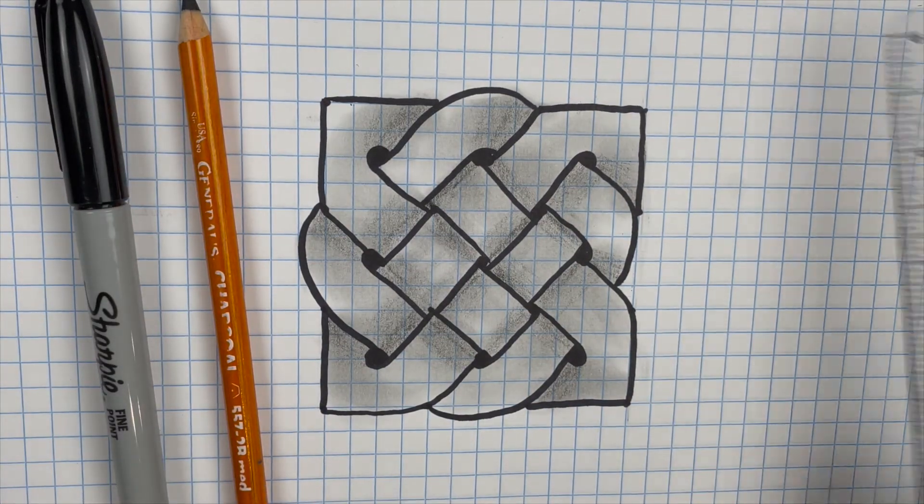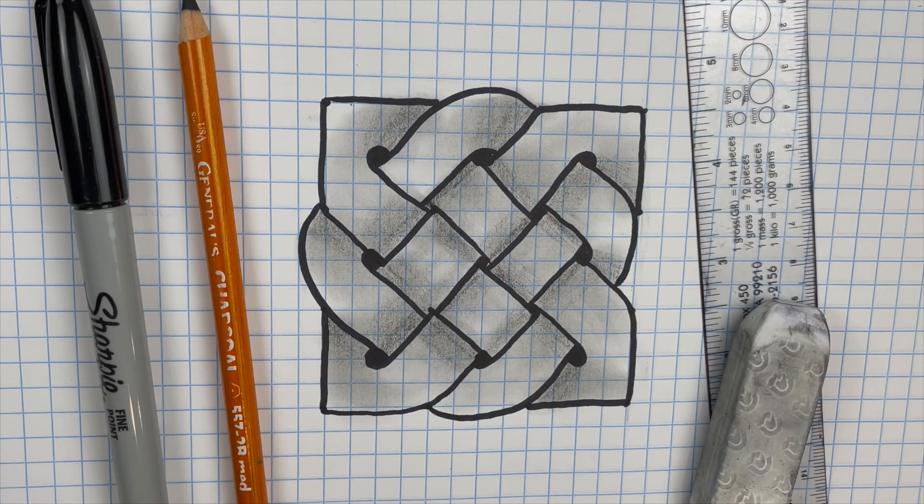When you're done, it just showed up in the corner there. Guys, I think we're almost done with this one. Look at this, just using a marker, using a pencil charcoal pencil, a ruler and an eraser. Look how cool you could make this pattern look. You could do it on paper, you could do it on graph paper.